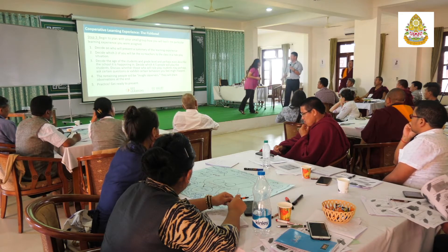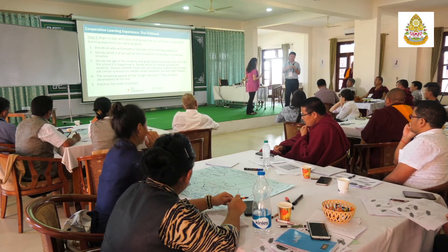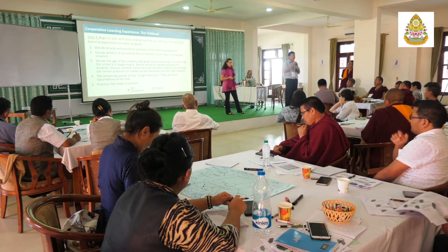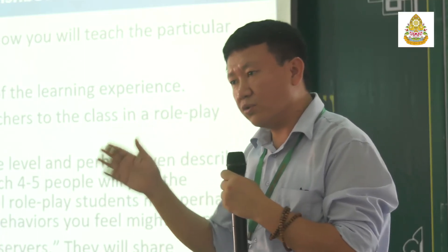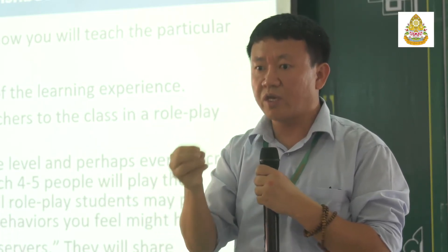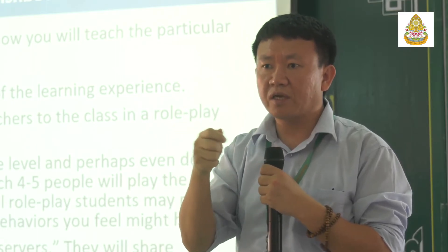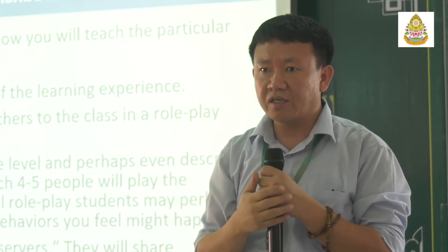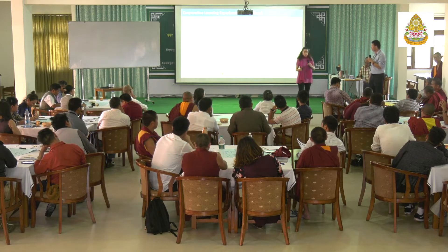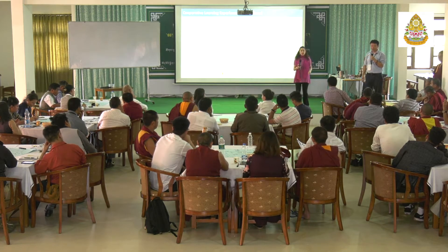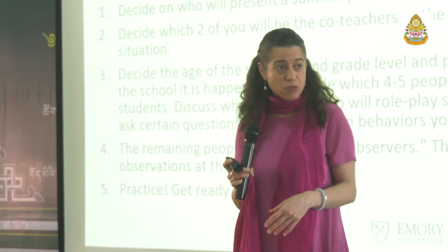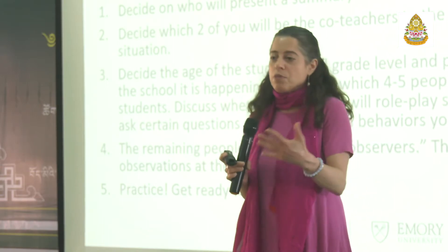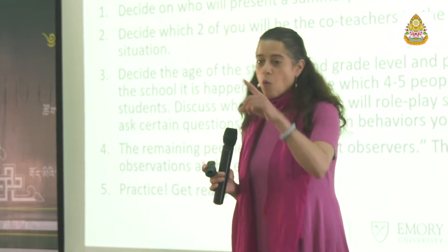So how many teachers will you have? Two. And then you'll choose a few students — probably four to five, maybe five, six, or seven students in your group. And then whoever is left will be the observers. And then how many people to summarize? One. This group is very good — everyone understands. Excellent.